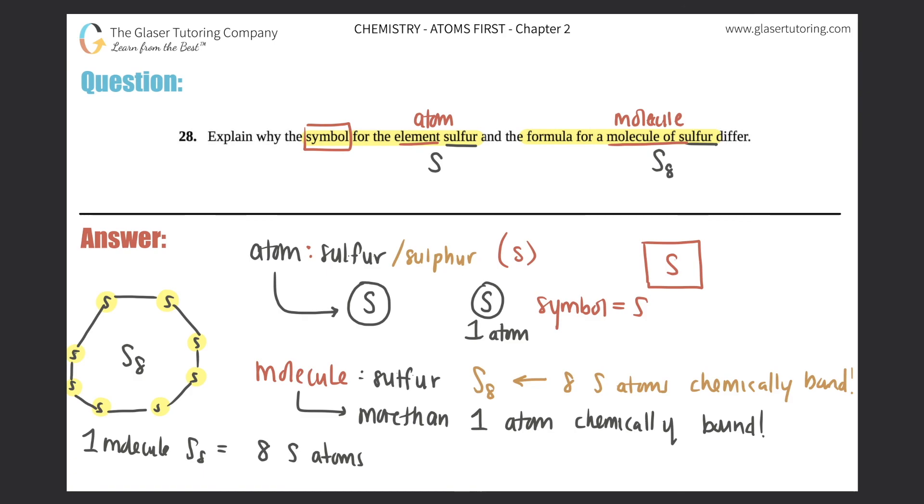And just like in the other one, in number 27, we talked about oxygen. So a single atom of oxygen would be O, but then the molecule would be O2. You see that? And in this S8 there's eight sulfur atoms. In the O2 molecule there were two oxygen atoms that are both chemically bound to one another.